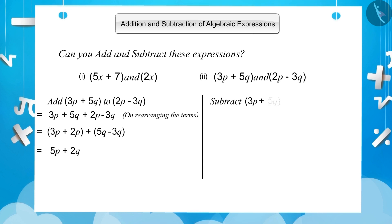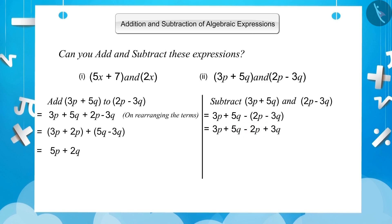Subtraction of 3p plus 5q and 2p minus 3q: 3p plus 5q minus (2p minus 3q). Here, we will bring the terms out of the brackets. As we know, in subtraction, while eliminating the brackets, the sign of the terms inside the bracket changes. This gives 3p plus 5q minus 2p plus 3q. Since 3p and 2p are like terms, and 5q and 3q are like terms, we rearrange: (3p minus 2p) plus (5q plus 3q). By combining the like terms, we get 1p plus 8q.